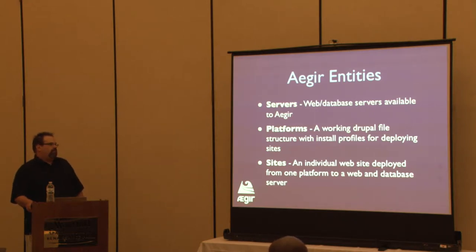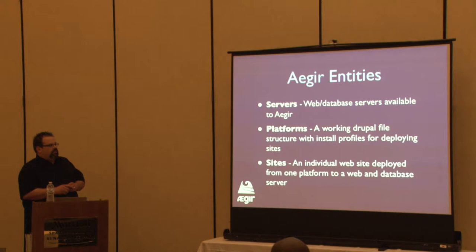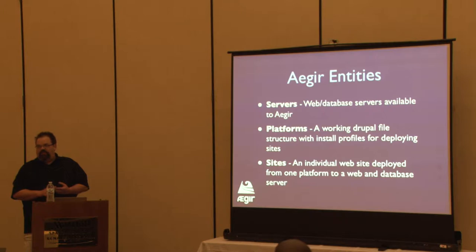Once you have Aegir installed, you've got three main components or entities. Servers — these are all nodes. When you create them, they become nodes. A server can be a web server, a MySQL server, an Nginx web server. It could run web and database, or one or the other if you want to split your database server from your front-end server. A server is just a designation so that Aegir is aware that thing exists.